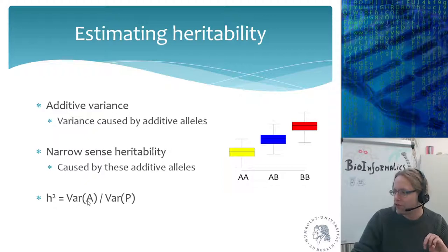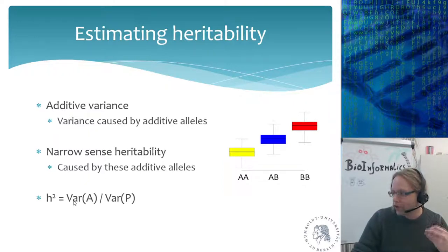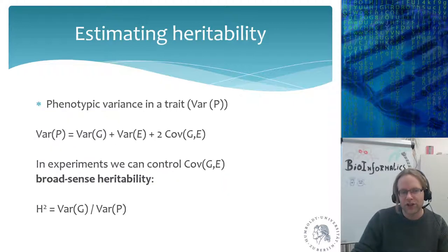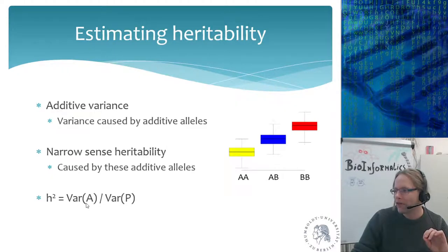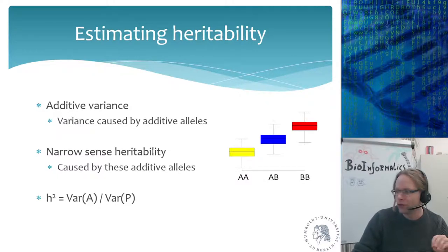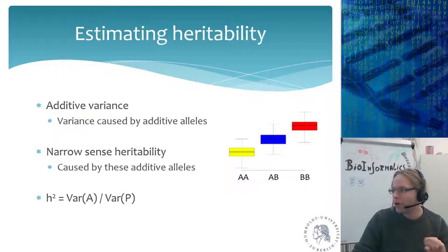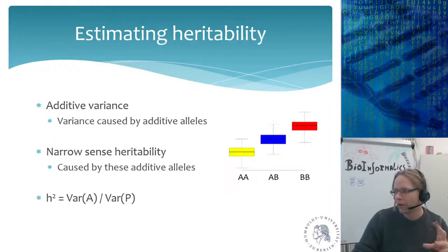Instead of the total variance from the genome, we now talk only about variance caused by additive alleles. When dealing with plants or animals generally, we use broad-sense heritability, but when talking about cattle or humans, we use narrow-sense heritability. The narrow-sense heritability is easier to use in breeding programs. When someone says a certain cow is very good, that's usually based on narrow-sense heritability, because that is the part used in breeding estimates.